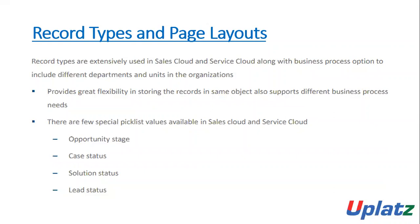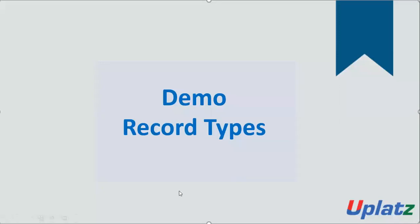Record types are extensively used in Sales Cloud and Service Cloud along with the business process options, to include different departments and units in the organizations. This provides great flexibility in storing records — the same object also supports different business process needs. There are a few special picklist values available in Sales Cloud and Service Cloud, like Opportunity Stage, Case Status, Solution Status, and Lead Status. Once you know about record types, you can edit the options available in these already-created picklist values. We will be creating record types on our Student object in the demo.